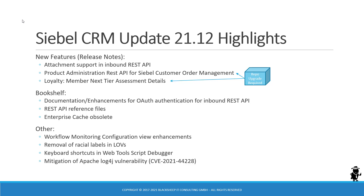First, attachment support in the inbound REST API. Then product administration REST API for Siebel customer order management. And in the loyalty application, a member next tier assessment detail functionality. The two last items in this list require a repository upgrade, which is the optional repository upgrade that you can run as part of the update. But if you want to uptake the features, then you have to run the repository upgrade.